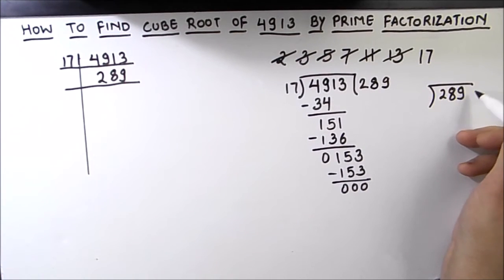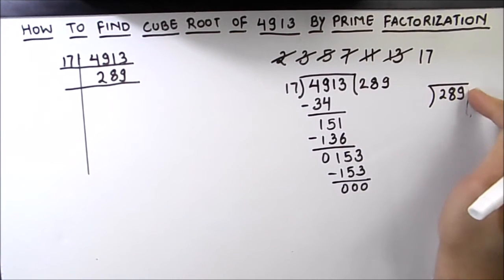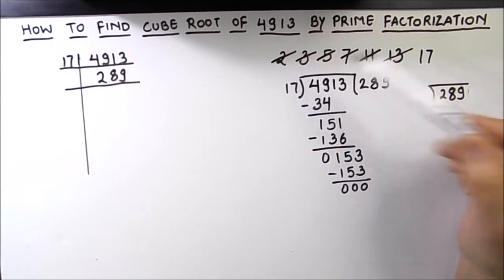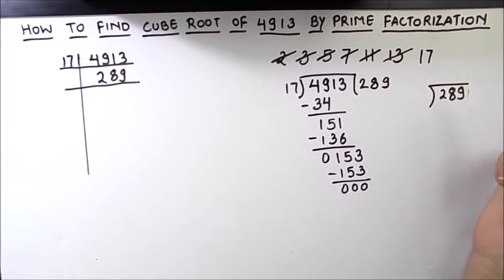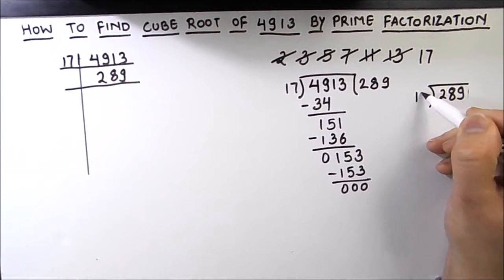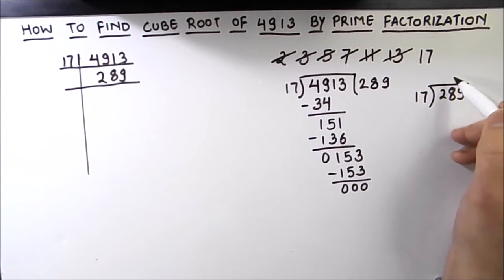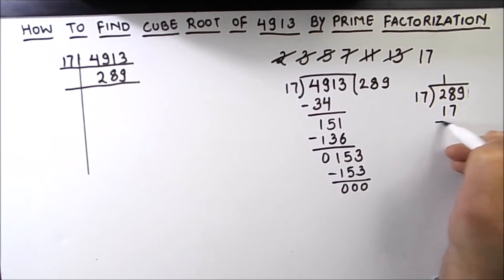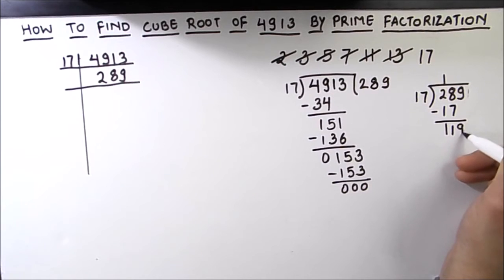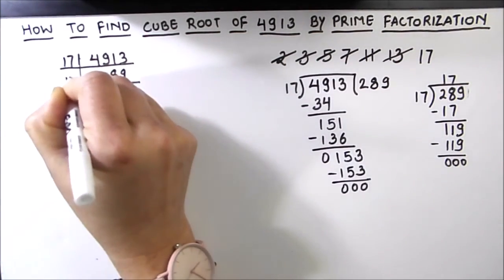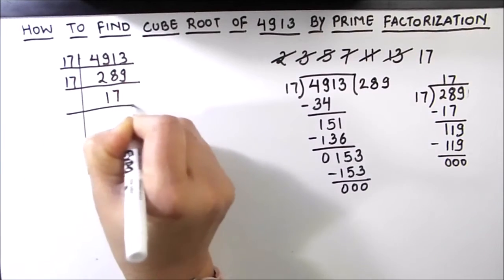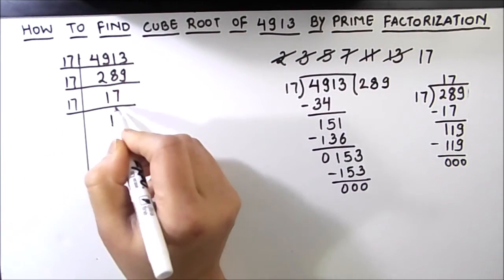Now let's find the factors of 289. It is an odd number, not divisible by 3, 7, 11, or 13. Let's try dividing by 17: 289 divided by 17 — 17 times 1 is 17, bringing down gives 119, and 17 times 7 is 119, so this is fully divisible by 17. Therefore 289 equals 17 times 17, and since 17 is a prime number, it is only divisible by 17.